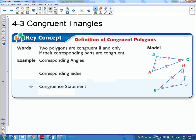So it means all of the corresponding angles are congruent, all the corresponding sides are congruent, and then you can say this polygon is congruent to this polygon. So order matters here.